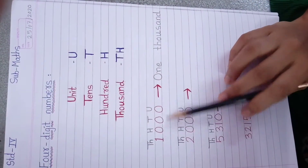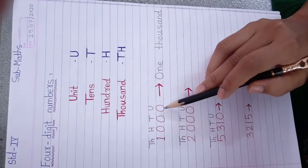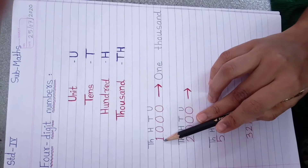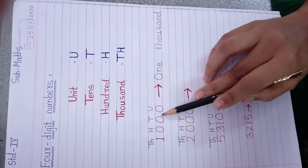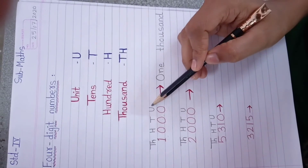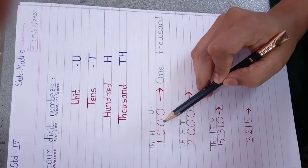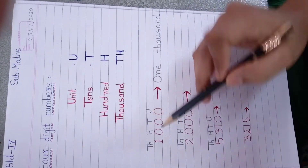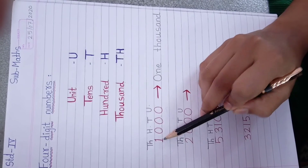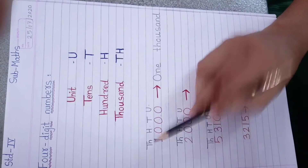See here, I have written one number. In that number, how many digits? Count it: 1, 2, 3 and 4 — 4 digits. So for the first digit the place value is unit (U means unit), then for the second digit tens, third digit hundred, and for the fourth digit TH means thousand.